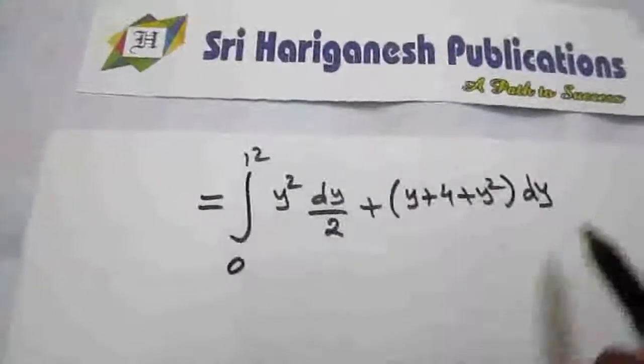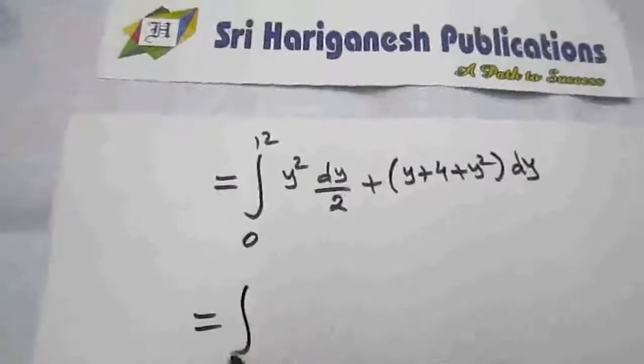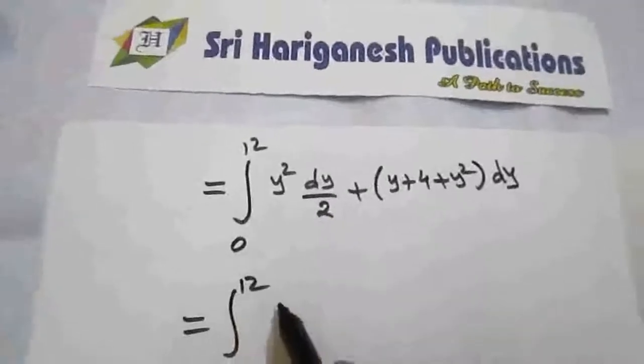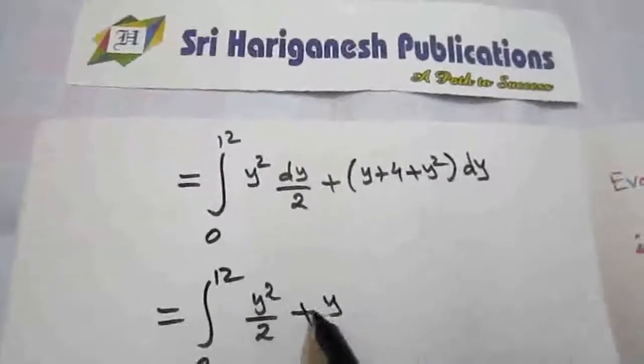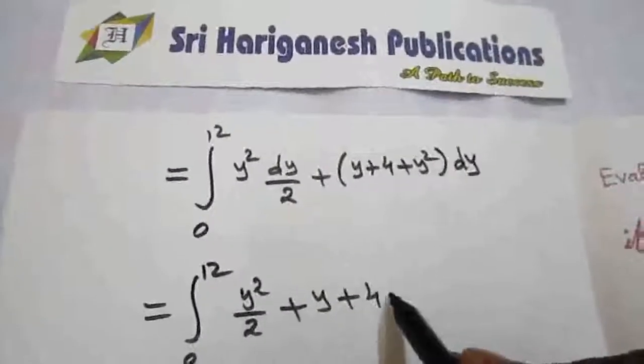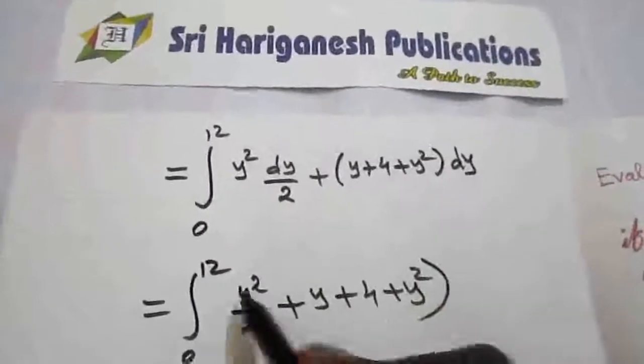And now take dy term outside. So integral 0 to 12. This is y²/2 + (y + 4) + y² dy.